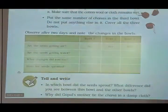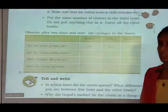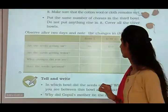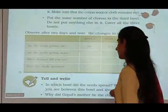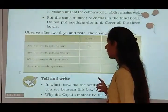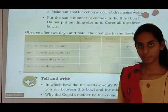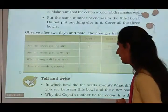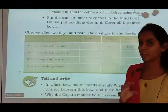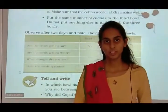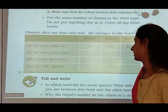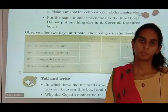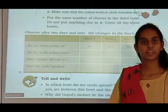Observe after two days and note the changes in the bowls. Are the seeds getting air? All three bowls are covered, so air will not get in. Are the seeds getting water? The first bowl has water, the second has a wet cloth, and the third has no water. The first one will be soaked, the second one sprouted, and the third will show no change. In two bowls, seeds are sprouted; in the third bowl, there is no change.